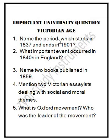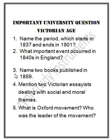First, name the period which starts in 1837 and ends in 1901. Second, what important event occurred in the 19th century in England? Third, name two books published in 1859. Fourth, mention two Victorian essays dealing with social and moral themes.